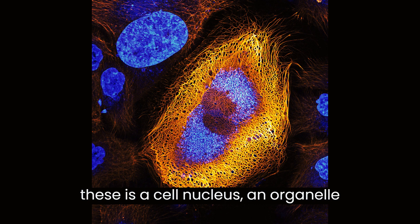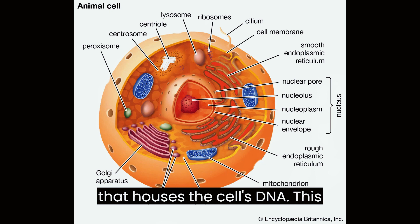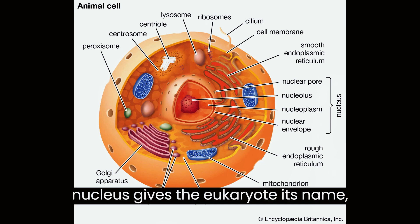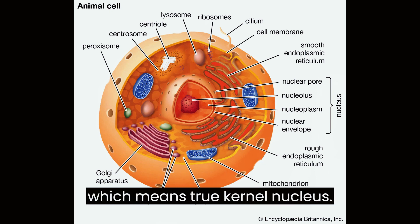Most important among these is a cell nucleus, an organelle that houses the cell's DNA. This nucleus gives the eukaryote its name, which means true kernel, nucleus.